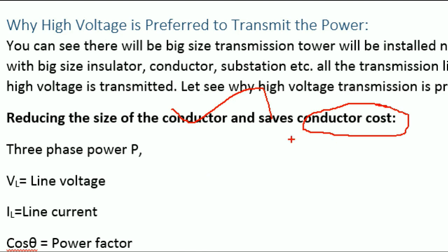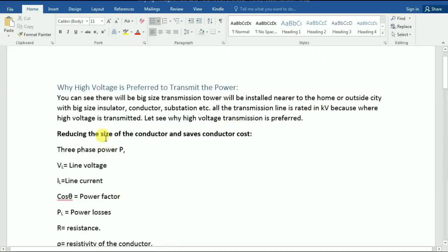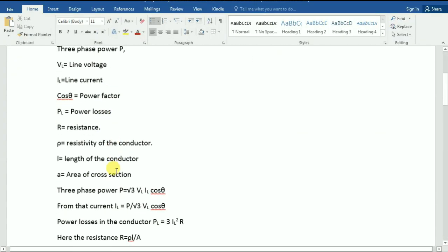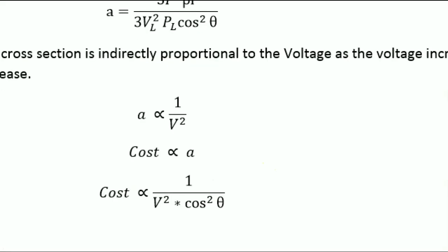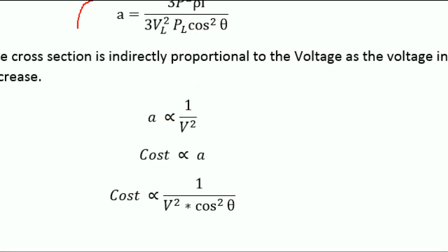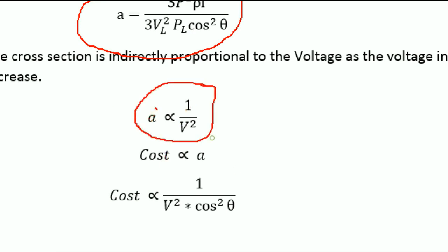The first point is going to be the conductor size, so we have to look at the size and make it correct. Please check the 3x power. Here is where the cross-section area is going to be solved. The cross-section is called A. The cross-section area is inversely proportional to voltage squared.